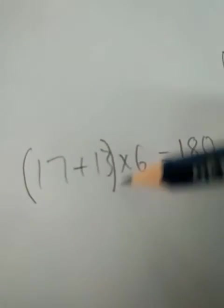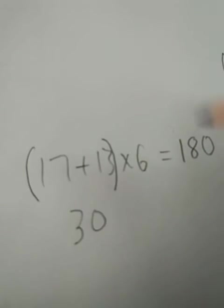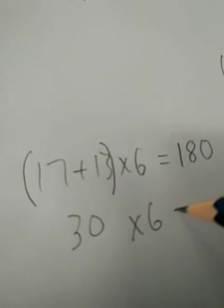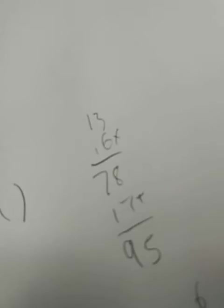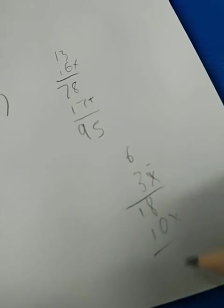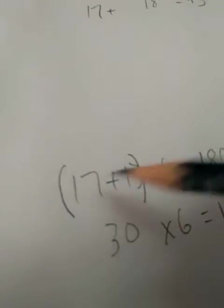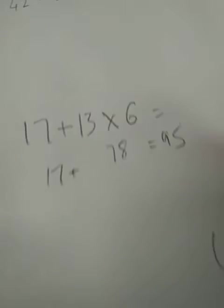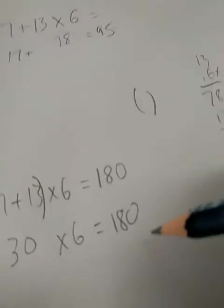So let's do our addition inside our brackets first. So 17 plus 13, that's going to give us 30, right? 30 multiplied by 6 equals 3 times 6 equals 18. 18 times 10 equals 180. Yeah, so that would equal 180. Excellent. So if we put our brackets into this equation here, our answer goes from 95 to 180.